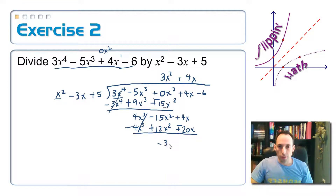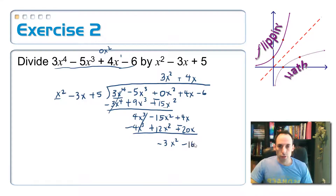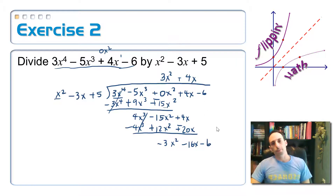Then I have negative 3x squared. And subtracting these, I have negative 16x. And then finally, bring down my negative 6.